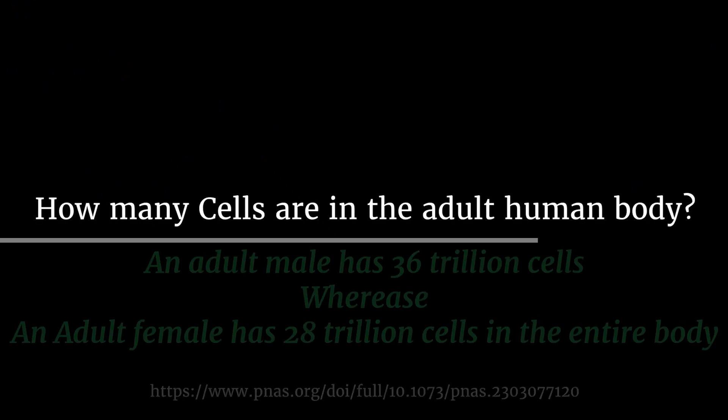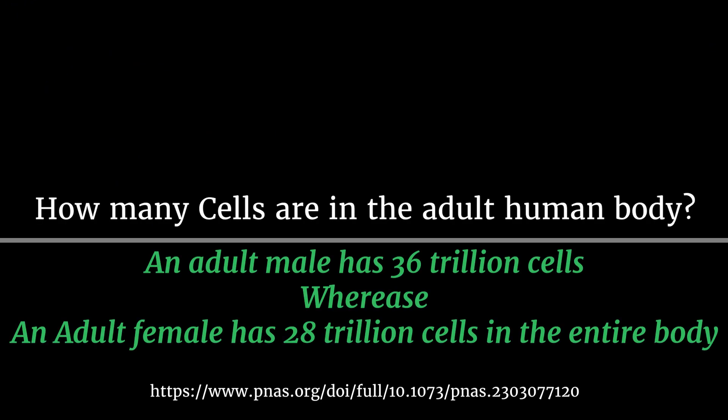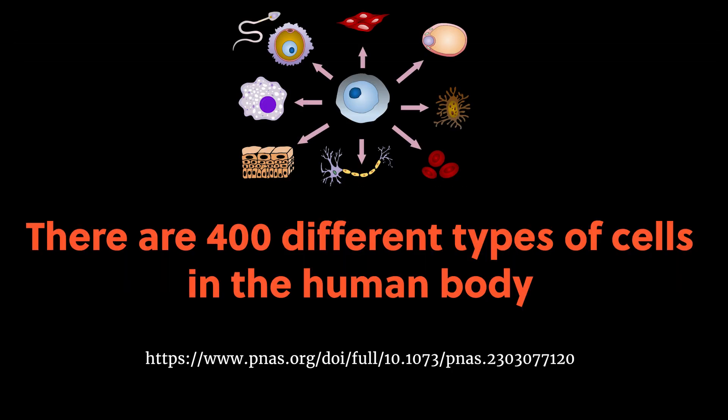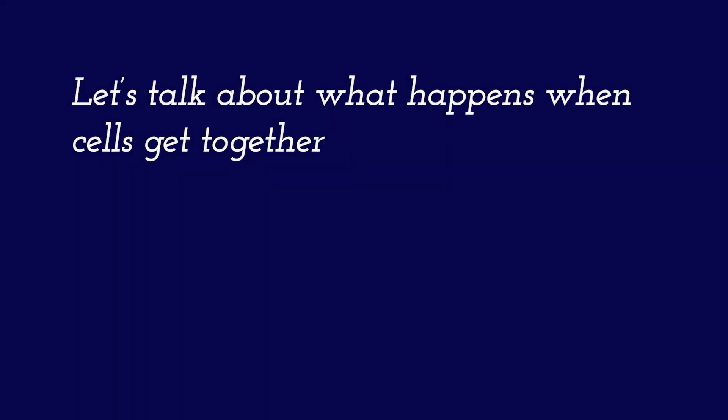Let us first find out how many cells are in the adult human body. An adult male has 36 trillion cells, whereas an adult female has 28 trillion cells in the entire body. There are almost 400 different types of cells in the human body. A few prominent ones are muscle, nerve, epithelial, and immune cells.